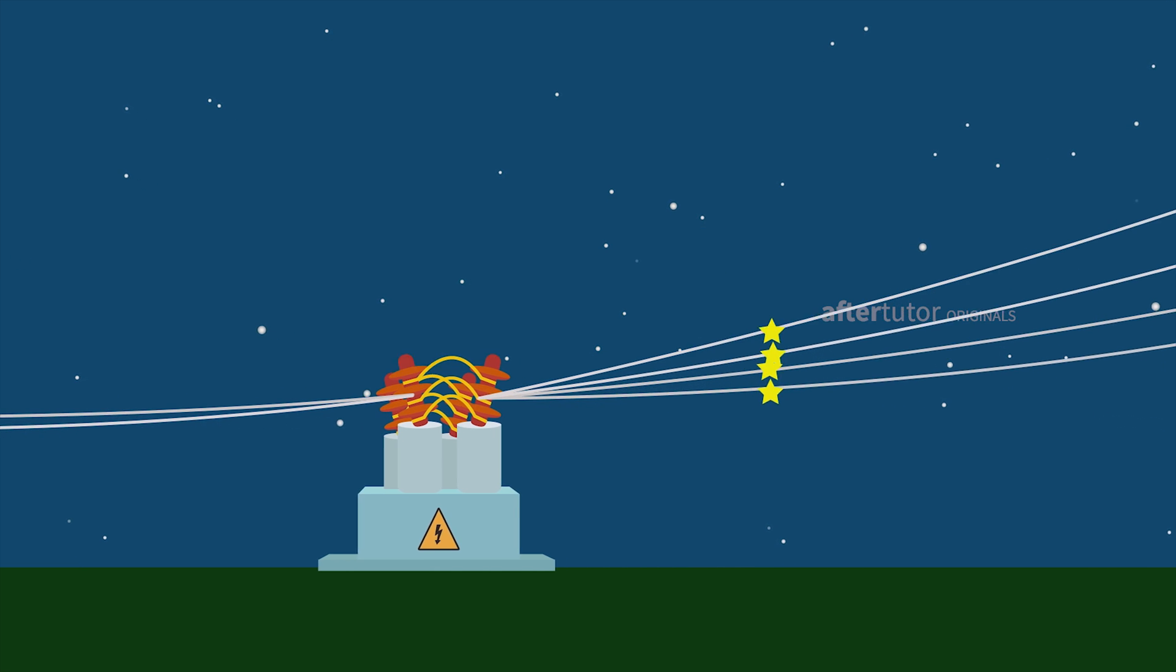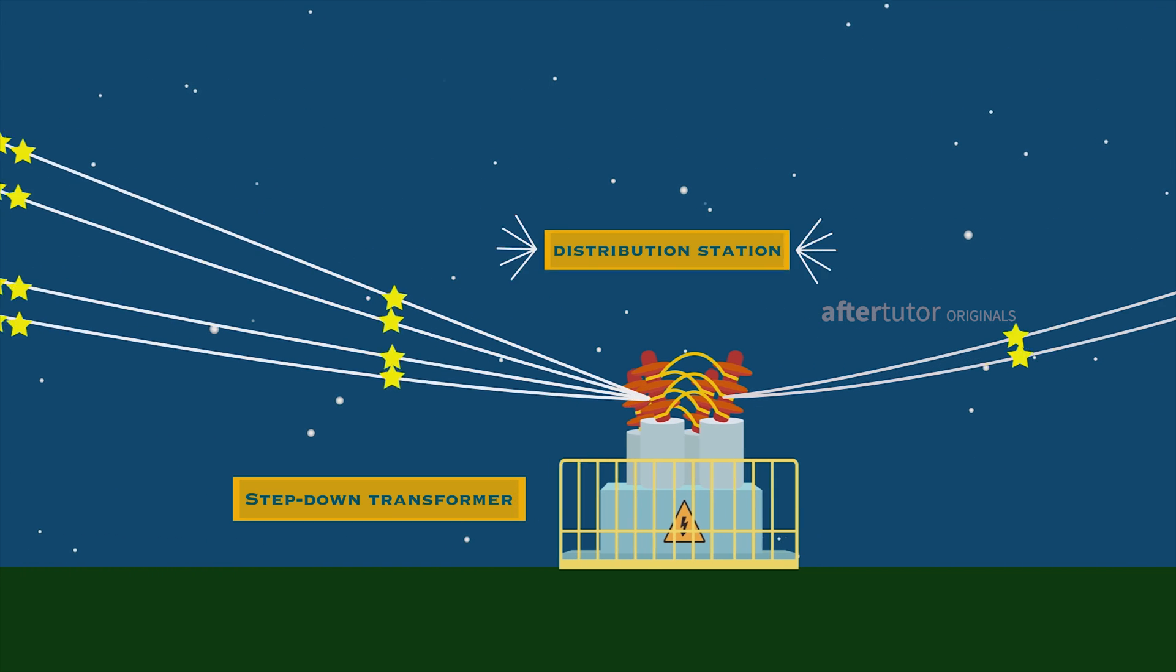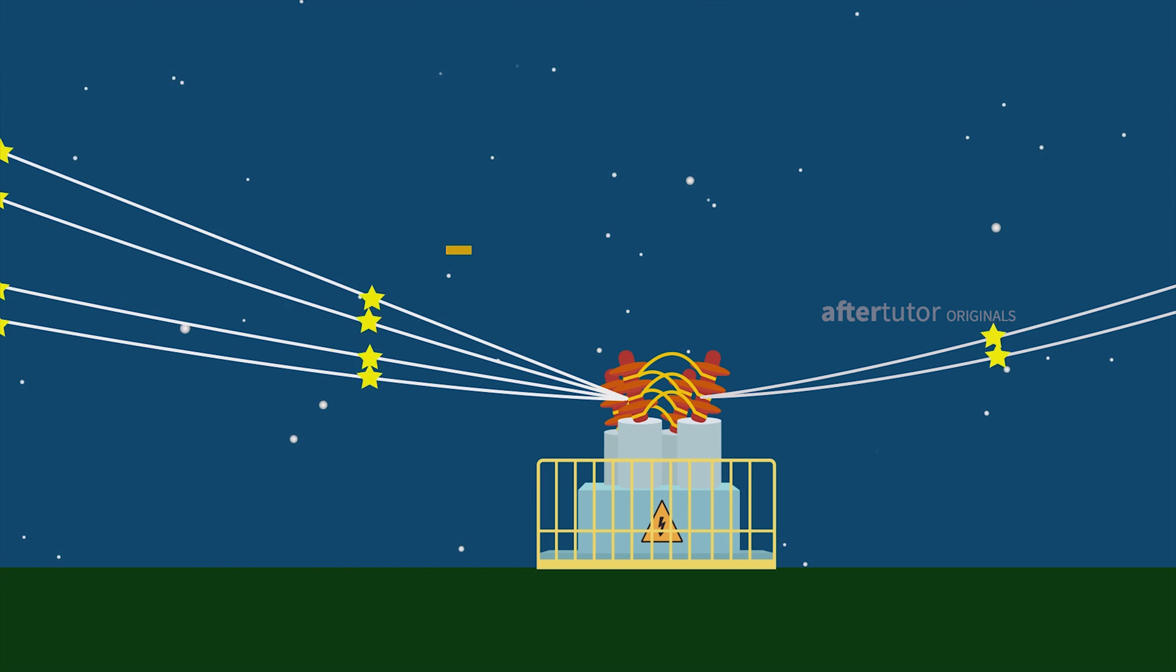The transmission lines carry this voltage to the substations or distribution stations, where the voltage gets transformed from 440 kilovolts to 11 kilovolts, which is safer for distribution.